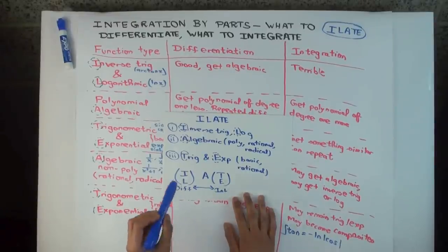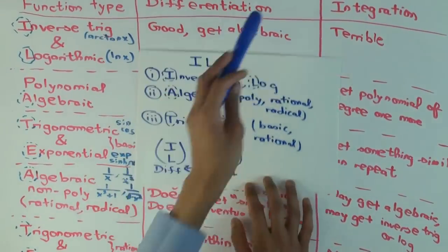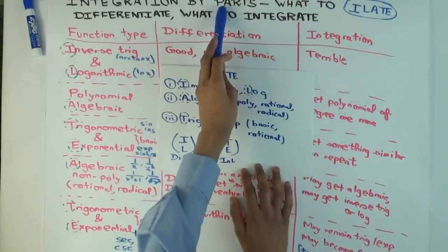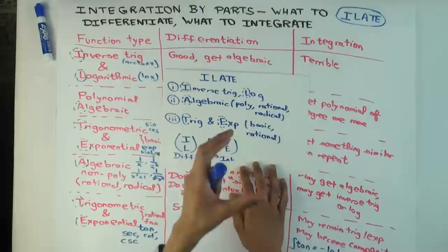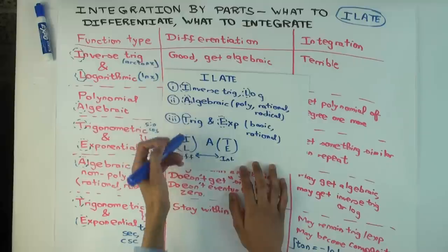Okay, so in this video I'm going to quickly state the general precedence rule to figure out what to differentiate and what to integrate when using integration by parts. The problem is I have something written as a product of two functions. I have to figure out which is the part to differentiate, which is the part to integrate.